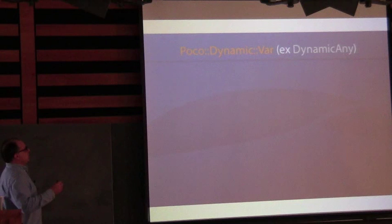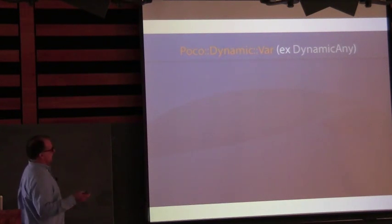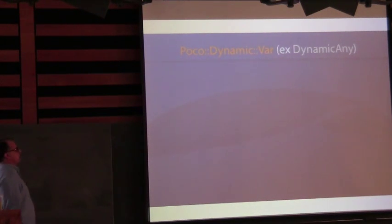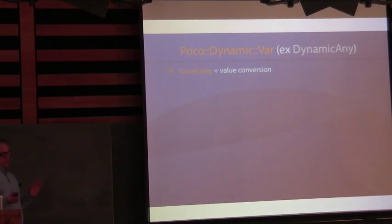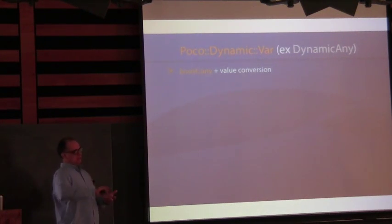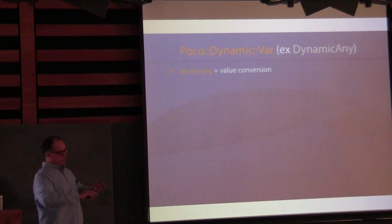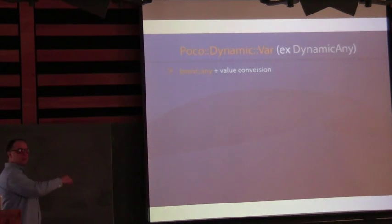Next is POCO Dynamic Var, which used to be called Dynamic Any. It's put in a separate namespace and is based on Boost.Any — you'll see Boost.Any as the foundation — with the extraction side elaborated so you can do things similar to what you've seen with Folly Dynamic.